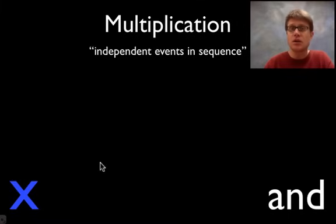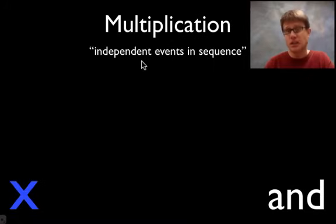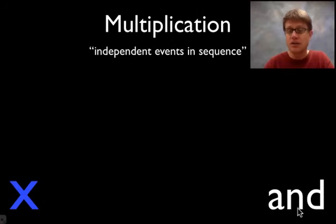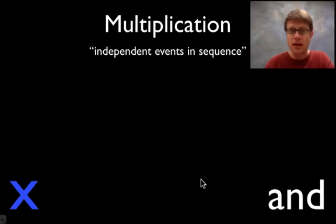Multiplication is going to occur in genetics if we ever have independent events that are going to occur in sequence. Another way to tip yourself off to that is if in the question it's saying the word 'and.'